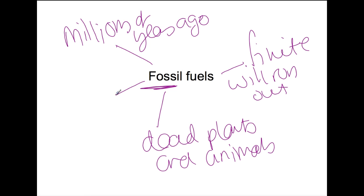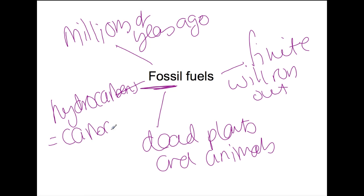Fossil fuels are a mixture of hydrocarbons. Hydrocarbons are molecules which contain carbon and hydrogen. Fossil fuels got their energy from the dead plants and animals which formed them. The plants and animals themselves got their energy from the sun — through photosynthesis for plants, and from eating plants and animals for animals.